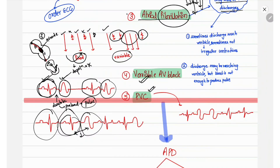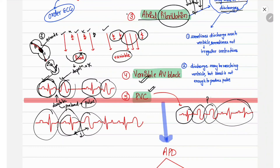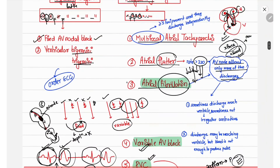Variable AV block has already been discussed. PVC — premature ventricular contraction — can also lead to an irregularly irregular pulse if it does not occur in a fixed pattern like bigeminy or trigeminy. For example, if there is a normal pulse, then two VPCs, then two normal pulses, there is no consistent pattern of irregularity, resulting in an irregularly irregular pulse.